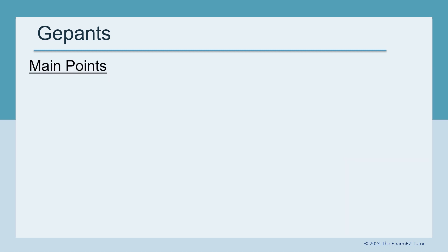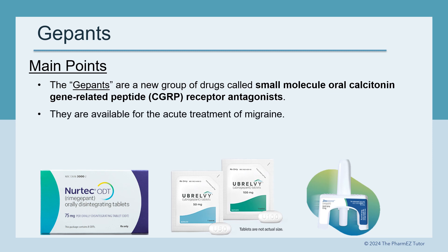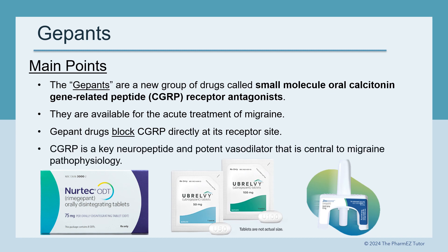Here are the main points about the G-PANs. The G-PANs are a new group of drugs called small-molecule oral calcitonin gene-related peptide, or CGRP, receptor antagonists. They are available for the acute treatment of migraine. G-PAN drugs block CGRP directly at its receptor site. CGRP is a key neuropeptide and potent vasodilator that is central to migraine pathophysiology.